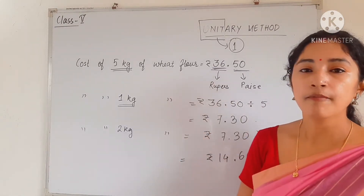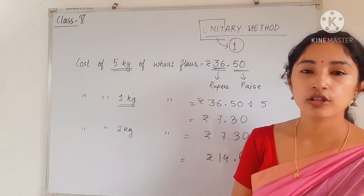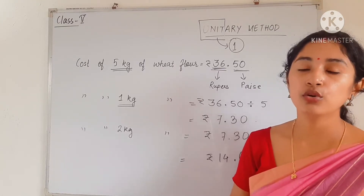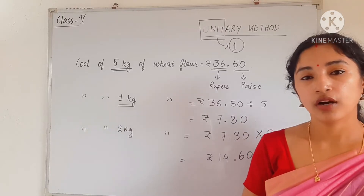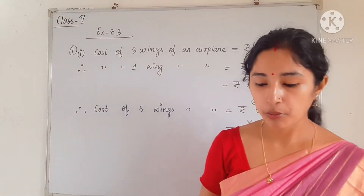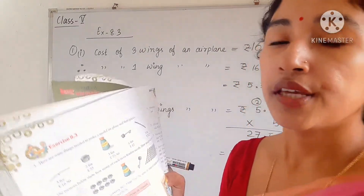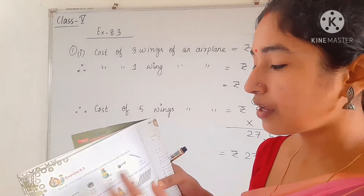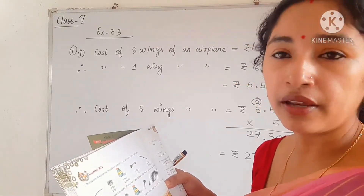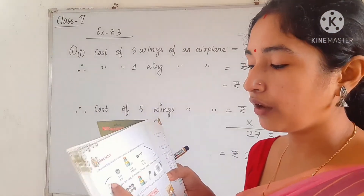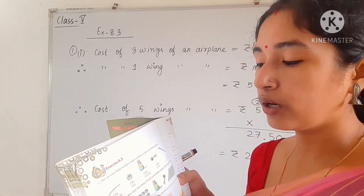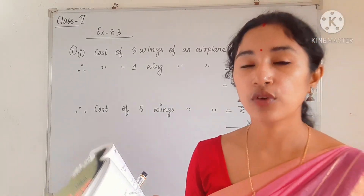This is called the unitary method. In exercise 8.3, we are given the cost of many items and we first find the cost of 1 item, then answer all questions. In question number 1, there is a model aeroplane with different pieces. The first piece is a wing. The cost of 3 wings is rupees 16.50.